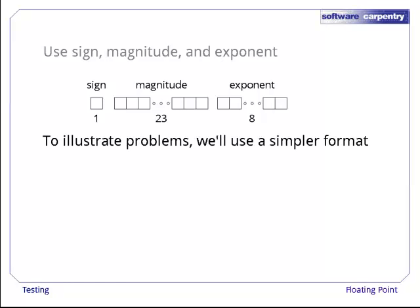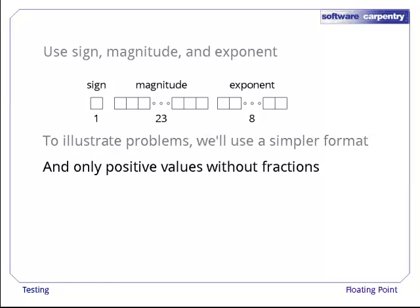To illustrate the problems with floating-point, we'll use a much simpler representation. We'll only worry about positive values without fractional parts. And to make it all fit on our slides, we'll only use 5 bits, 3 for the magnitude and 2 for the exponent.